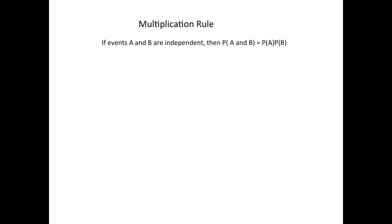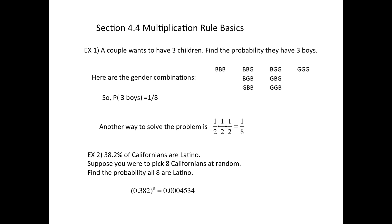So basically the multiplication rule says if events A and B are independent, that means, for example number two, when you choose the first person, they happen to be Latino. For them to be Latino, does that have any effect on the second person being Latino?